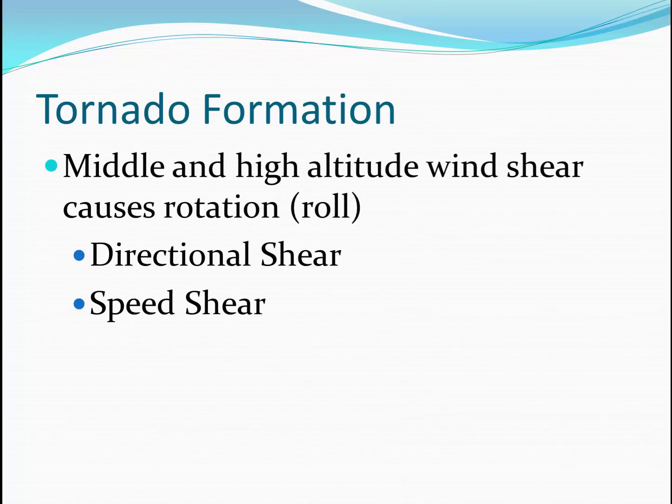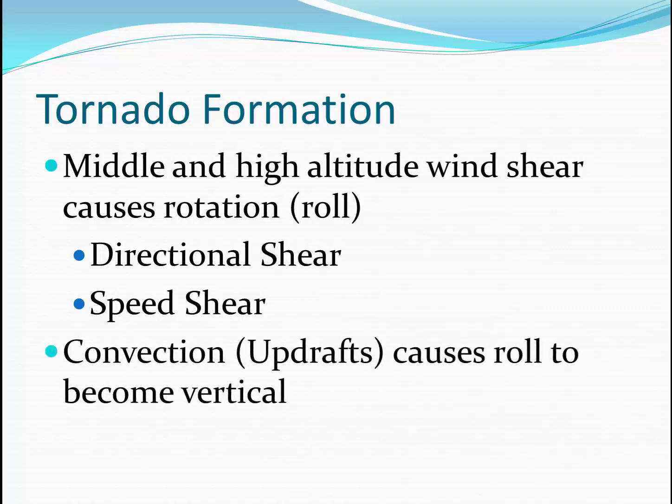Let's summarize this. For tornado formation, middle and high altitude wind shear will often cause rotation or roll in the atmosphere. This may be caused by directional shear — winds coming from opposing directions — or speed shear, which is when winds at different elevations are going at different speeds, typically higher speeds aloft and lower speeds near the ground. The convection and updrafts in the cumulonimbus cloud may cause the roll to become vertical. When this area of rolling air is pulled into the updraft, it can go on to form a tornado if it comes in contact with the ground.